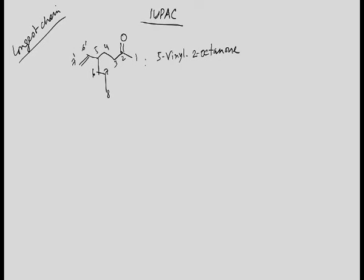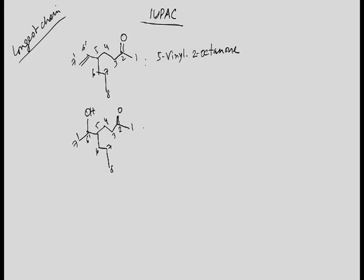Now if you put a hydroxy group here: 1, 2, 3, 4, 5, 6, 7, 8 and 6-7. So here also this is the longest chain, so you have to take this one only. And this group is hydroxyethyl. So the name is 5-(1-hydroxyethyl)-2-octanone, or octane-2-one is also okay.